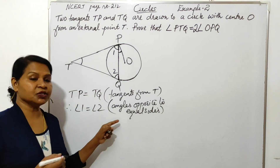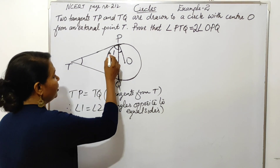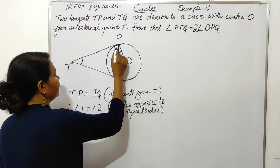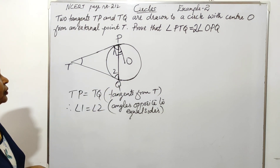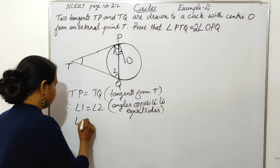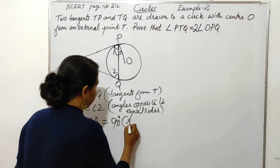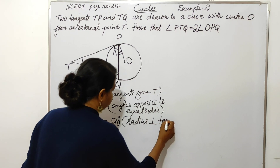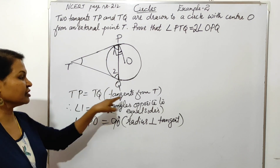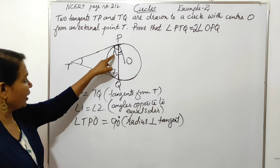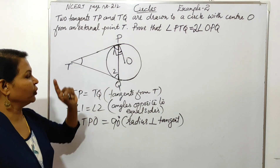Isosceles triangle — angles opposite equal sides are equal. So, the angle TPO is 90 degrees. Why? Because radius is perpendicular to tangent. So, TP equal to TQ because tangents drawn from an external point to a circle are equal. Therefore, angle 1 equal to angle 2, because angles opposite equal sides. And angle TPO equal to 90 degrees, because radius is perpendicular to tangent.